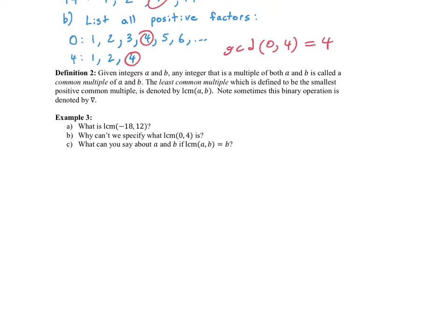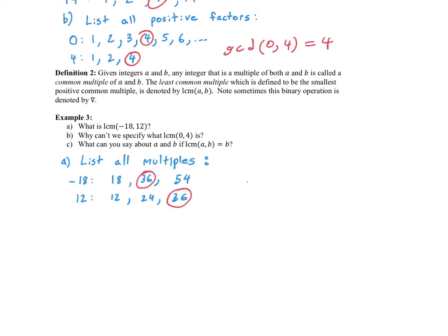Let's find LCM(−18, 12). We only list positive multiples. Multiples of 18: 18, 36, 54... Multiples of 12: 12, 24, 36... As soon as we find a match, that's the least common multiple. We found 36, so LCM(−18, 12) = 36.